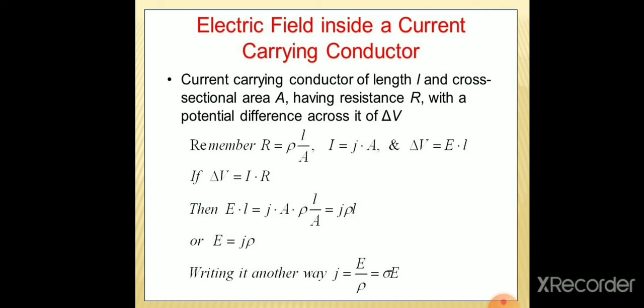Let us discuss about the electric field inside a current carrying conductor. Let the current carrying conductor be of length L and area of cross-section A having a resistance R with a potential difference delta V across it. We know R is equivalent to rho L by A, I is equivalent to J into A, and V is equivalent to E into L. We have studied V is equivalent to E into D in the previous chapter.